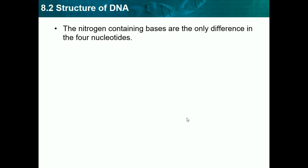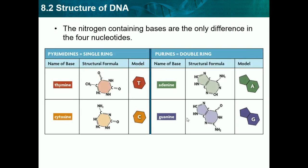The nitrogen-containing bases are the only difference in the four types of nucleotides in DNA. The four nucleotides are thymine, cytosine, adenine, and guanine. They divide into pyrimidines and purines. Pyrimidines have single rings — thymine and cytosine both have one ring — while purines are double rings. We need to be able to categorize and label these.